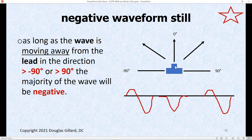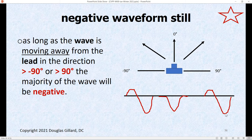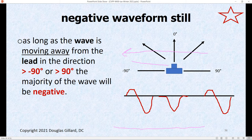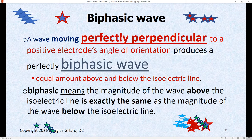If a wave is heading straight at the camera, the limb lead will draw the waveform perfectly upright. If it's coming in at an angle, it won't be perfectly upright — most of it will be upright but some will dip below the isoelectric line and come back. That's a biphasic wave. The only time you see a perfectly upright wave in the QRS complex is if the current is heading straight at the positive electrode. If the current is moving perfectly perpendicular to the camera, you get a perfect biphasic wave where the magnitude above equals the magnitude below the isoelectric line.